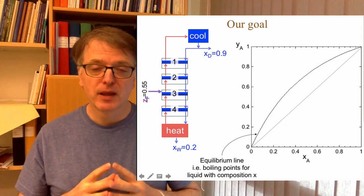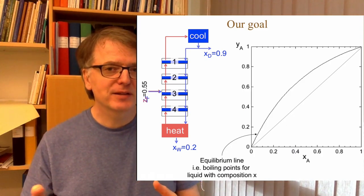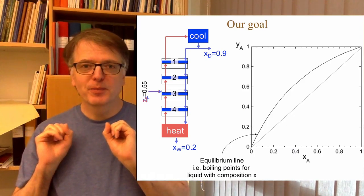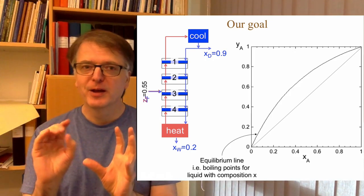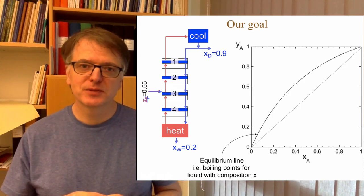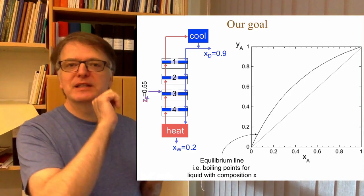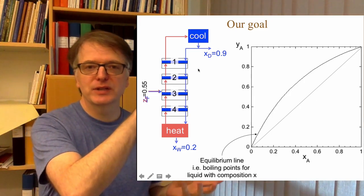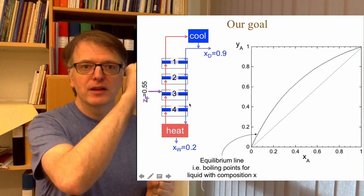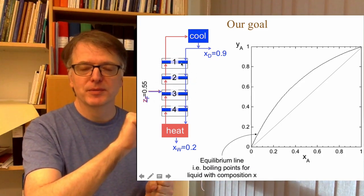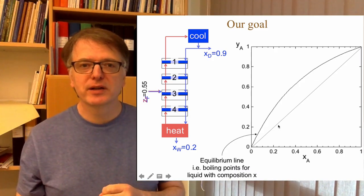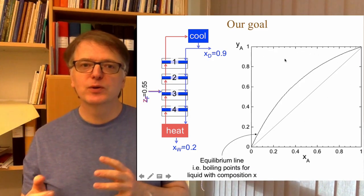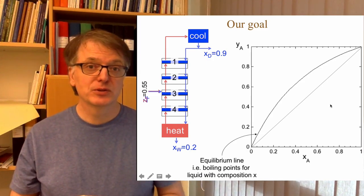Our goal is to use McCabe-Thiele's graphical method. How does that work? Well, before we go into theory, let's just describe very, very shallowly how this works. What we will do is divide the distillation column into sections, and these sections are in equilibrium. Then we will use the XY diagram to draw graphical solutions.